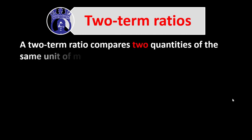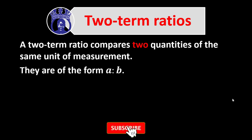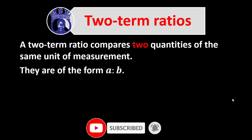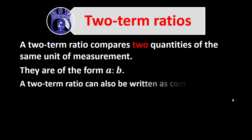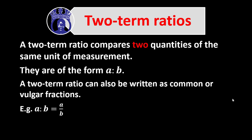A two-term ratio compares two quantities of the same unit of measurement, and they are of the form A to B. A two-term ratio can also be written as a common or vulgar fraction. For example, A to B can be written as A over B.